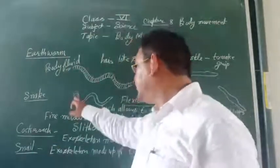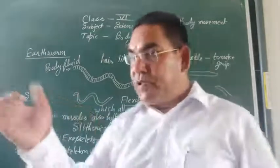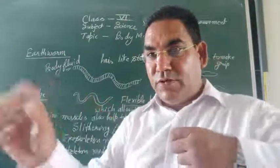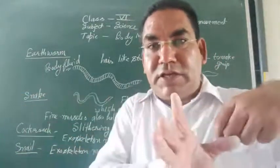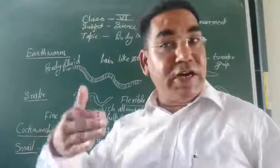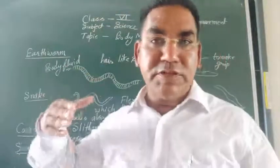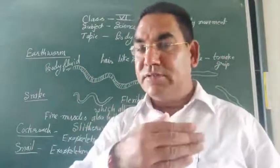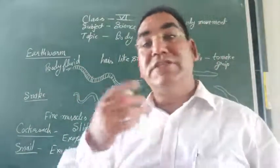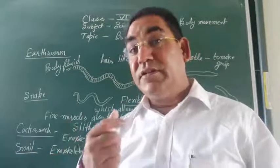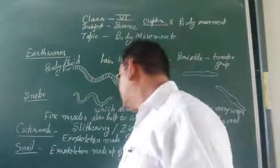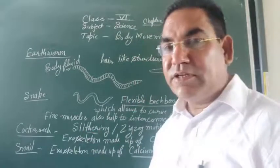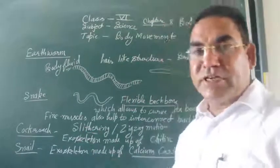Because of this, the snake moves in loops — if the loop turns one way, it turns back the other way. In this way it moves; it cannot move in a straight line. It moves in a zigzag pattern. This kind of movement is known as slithering movement.